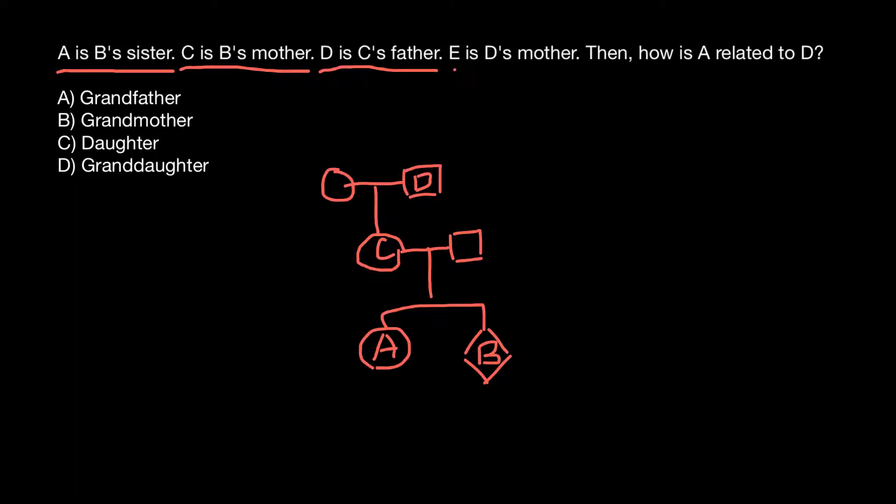E is D's mother, so we add parents here. This is going to be E. Then how is A related to D?